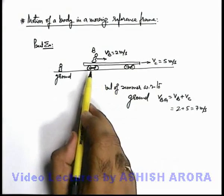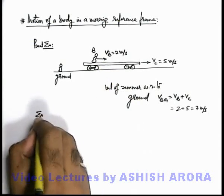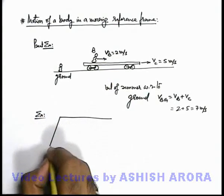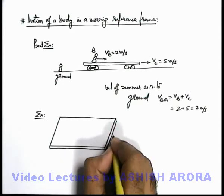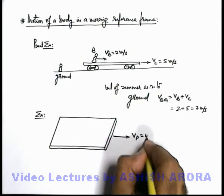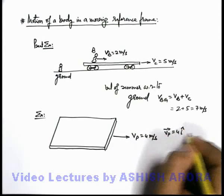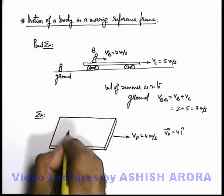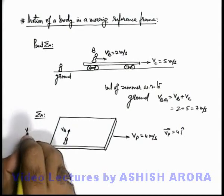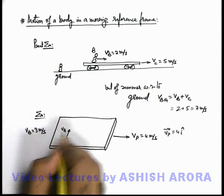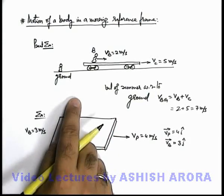In a similar manner, let's take another example in which the runner is running in a different direction. Say we have a platform moving in the x direction with a velocity v-p equal to 4 meters per second, so v-p vector can be written as 4î. A runner is on the platform running in a perpendicular direction with a velocity v-b equal to 3 meters per second, so the velocity vector of the runner can be written as 3ĵ meters per second, because he is running in the y direction.